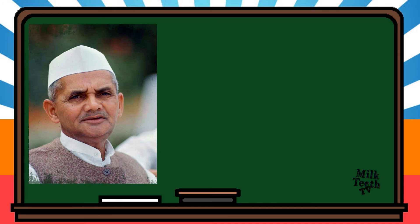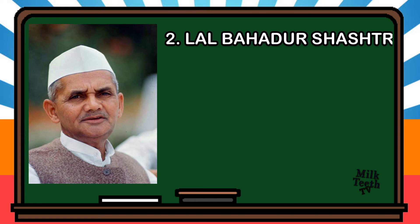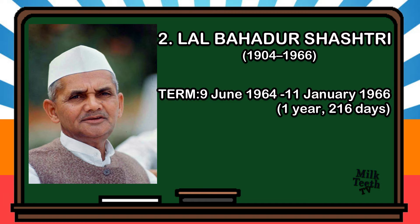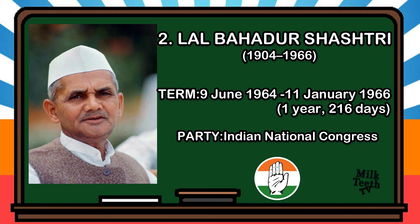The second Prime Minister of India was Lal Bahadur Shastri. He was born in 1904. His term lasted from 9th June 1964 to 11th January 1966, followed by his death — a period of one year and 216 days. Party: Indian National Congress.